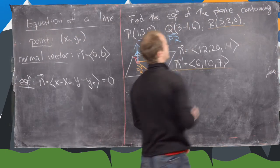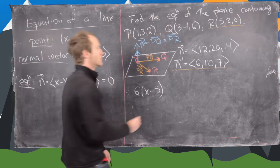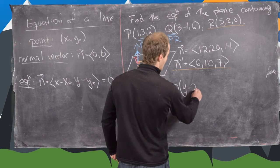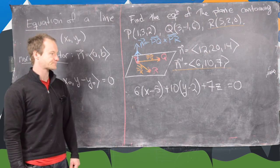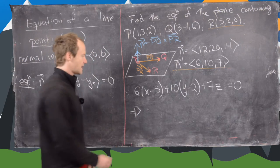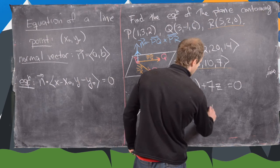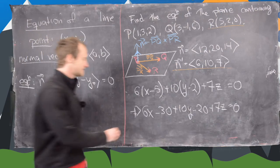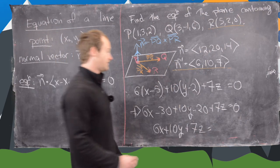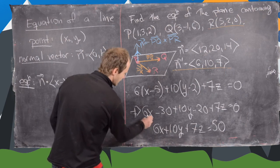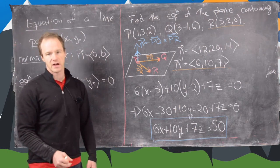Using the scalar equation with normal vector (6, 10, 7) and point R = (5, 2, 0), we get 6(x - 5) + 10(y - 2) + 7(z - 0) = 0. Simplifying: 6x - 30 + 10y - 20 + 7z = 0, which gives us 6x + 10y + 7z = 50. This is generally how you write the equation of the plane in the end — all the x's, y's, and z's on one side and just a number on the other. This is the end of this example and the end of the video.